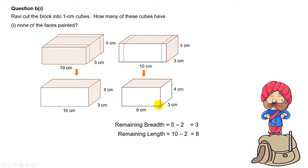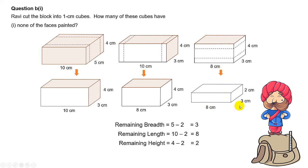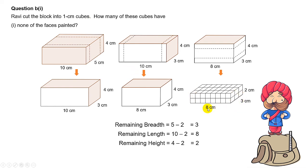Now lastly, you have to cut the top and the bottom, because the top and bottom also have a painted surface area. After cutting the top and bottom, you end up with 8 by 3 by 2. This will be the leftover block which has none of the faces painted. Because you are cutting everything into 1cm cubes, the total number of unpainted cubes will be 8 times 3 times 2, and the answer is 48 cubes.